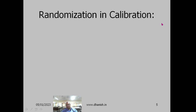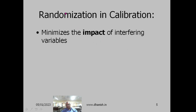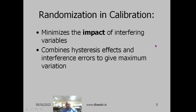In calibration experiments, where we try to calibrate one instrument using certain standard values, by carrying out the experiment in random order, the impact of interfering variables is minimized — not eliminated, but minimized. During calibration, when you take readings in increasing order and then in decreasing order, there will be a difference — that is called the hysteresis effect. Those effects and indifference errors get mixed up with the effect due to extraneous variables to give maximum variation.